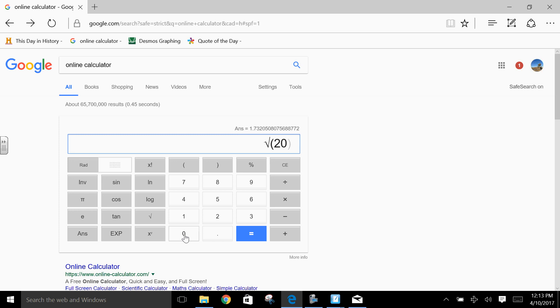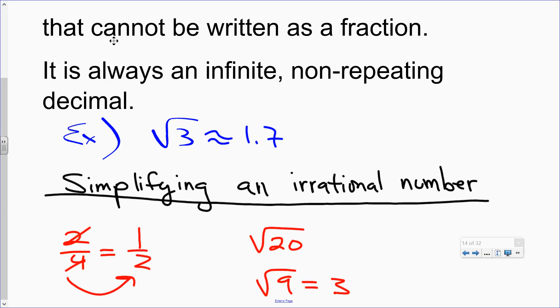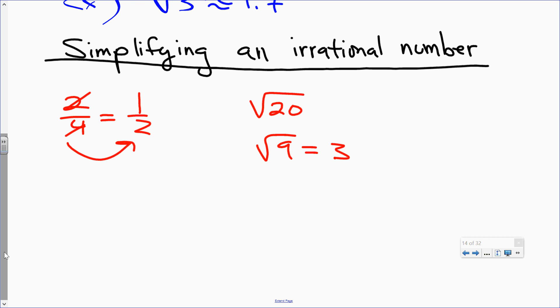Check this out. Square root of 20. So it's 4.5 approximately. But here's what I'm going to teach you now. Watch.